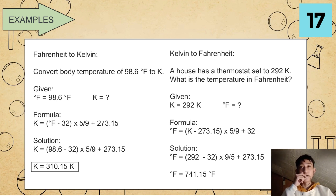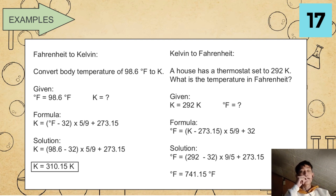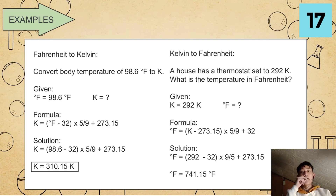We also have an example in Fahrenheit to Kelvin: convert body temperature of 98.6 degrees Fahrenheit into Kelvin. Given: degrees Fahrenheit equals 98.6. We are finding Kelvin. Our formula is K equals parenthesis of degrees Fahrenheit minus 32 times 5 over 9 plus 273.15. Substituting: K equals parenthesis 98.6 minus 32 times 5 over 9 plus 273.15. Our final answer is K equals 310.15 Kelvin.